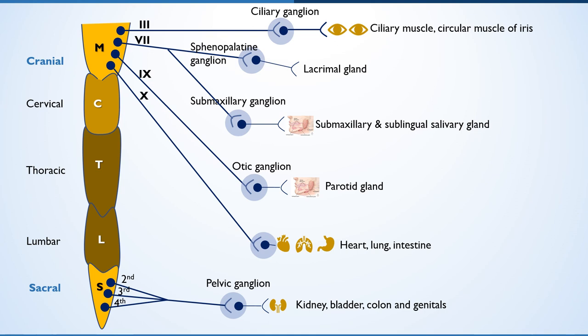Stop the video and see this diagram for parasympathetic innervations of peripheral effector organs. The third nerve innervates the ciliary muscles and circular muscles of the iris. Similarly, the sacral outflow has ganglia at the pelvic region and innervates the kidney, bladder, colon, and the genitals.